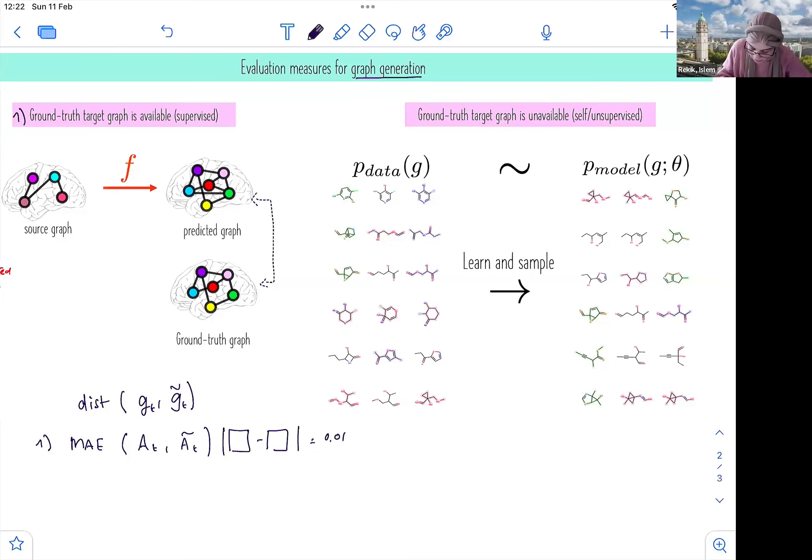What you can do also, you can have a distribution, the distribution of the weight matrices here, the weights of the edges. So if it's a weighted graph and you calculate the KL divergence between these two. So it will give you an idea about the divergence, about the distribution, the statistics, the distance between the distribution of these two graphs. So that's one way.